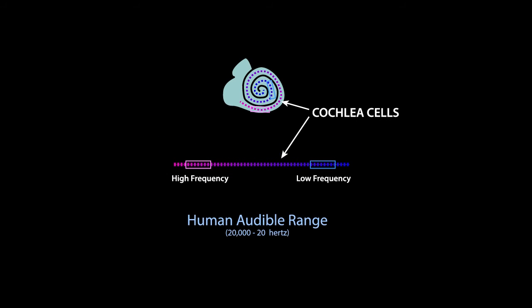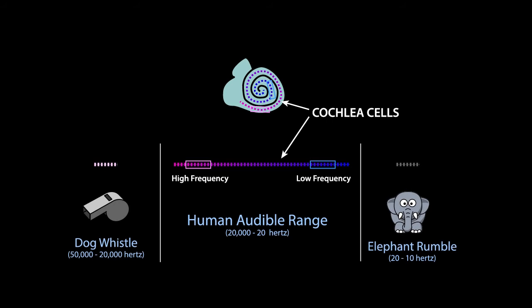And now it's time for the final sound facts! Humans can only hear sounds within a certain frequency range. The sounds from a dog whistle and an elephant rumble are outside our audible range.